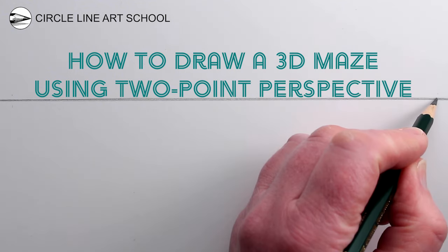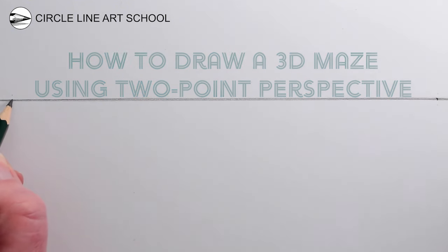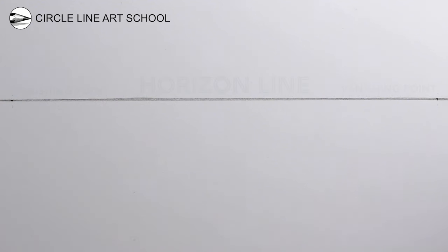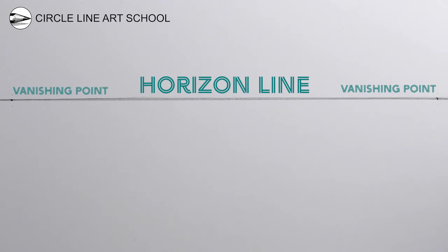Start by drawing a horizontal line across your paper and then a vanishing point at each end of your horizontal line. All of the receding lines will go towards one of the two vanishing points.